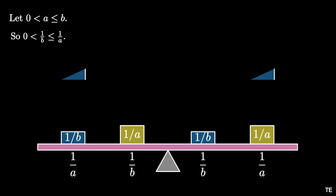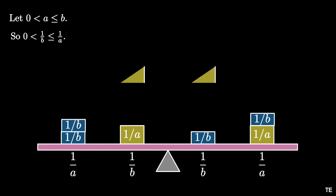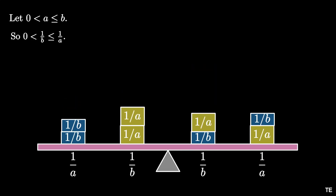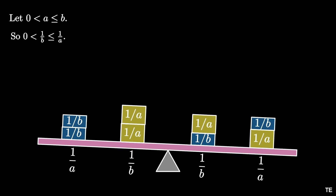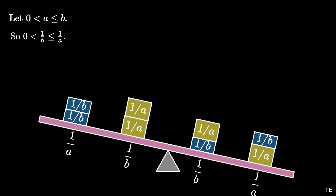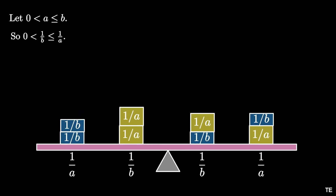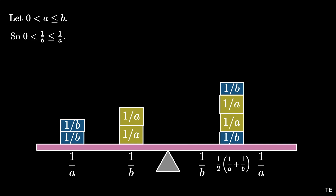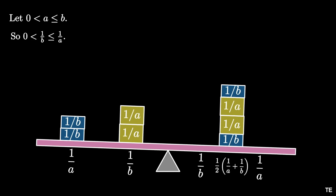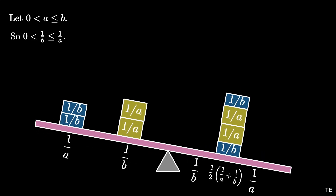We place a mass of 1/b at distance 1/a on both sides of the fulcrum, and a mass of 1/a at distance 1/b on both sides. These don't affect the net moment of the system, so it will again rotate clockwise. Moving the right-side masses equal and opposite distances to the midpoint (1/2)(1/a + 1/b) still maintains the same net moment.